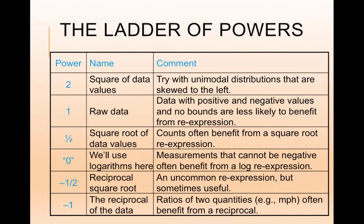The power of a negative 1 half is the reciprocal square root, 1 over the square root of y. This is an uncommon re-expression, but can be useful. The power of negative 1 is like the inverse or the reciprocal of the data, so you flip it. This is good if your units are a ratio of two quantities, like miles per hour, gallons per mile, any ratio.